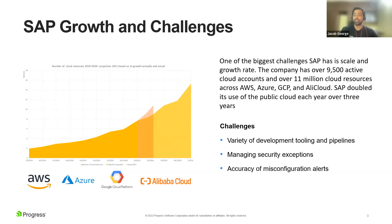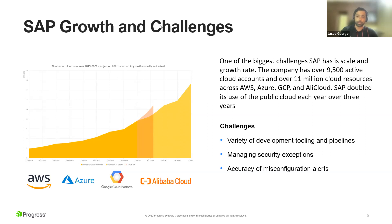SAP overall almost doubled their cloud adoption over a duration of three years, up to 2021. The cloud infrastructure that SAP used had 9,500 active cloud accounts and over 11 million resources. These cloud accounts and resources were not spread across one cloud service provider — they were across AWS, Azure, GCP, and Ali Cloud, which validates what we were talking about before: people are adopting the multi-cloud approach.